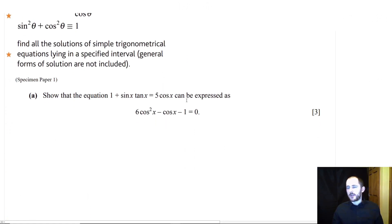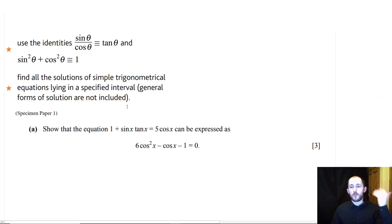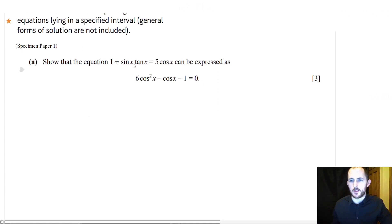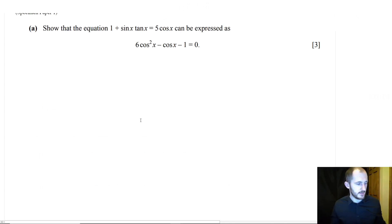Probably the trickiest part of this section is using trig identities to rearrange equations, and also finding all solutions for simple trig equations lying in a specific interval. This is using the CAST diagram or the graphs. I'm going to show you the CAST diagram because it is far more reliable and more mathematical. Typically there will be a part A where you show something can be rewritten, and a part B where you solve it using that result.